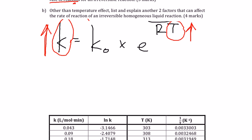The second part asks, other than temperature effect, list and explain two factors that can affect the rate of reaction of an irreversible homogenous liquid reaction. So, the two other factors, one of them is concentration.